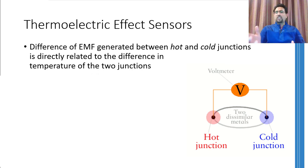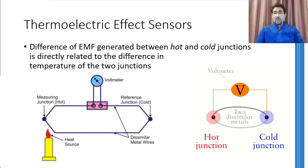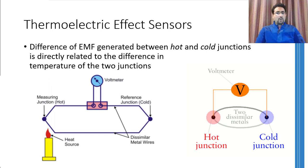You must be wondering how a single junction can generate a voltage. The basic requirement for any electric circuit is that there should be a complete circuit in which electrons can flow. In thermocouples, instead of one junction only, there are in fact two junctions. One junction is maintained at a lower temperature whereas the other is exposed to a higher temperature. The temperature difference between these two junctions defines how much voltage will exist between them. Electrons at the hot junction have more energy and try to move towards the cold junction, and as both metals are different, both will have different amounts of free electrons, causing a current to flow.